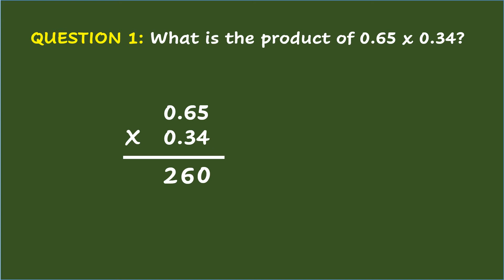Since the answer is more than 10, regroup 1 to the next higher place and retain 5. Make sure to start placing the answer in line with the second digit, which is under 6. Then 3 times 6 plus 1 equals 19. Since the answer is more than 10, regroup 1 to the next higher place and retain 9. Then 3 times 0 plus 1 equals 1. For the last digit, 0 in the multiplier: 0 times 5 equals 0, 0 times 6 equals 0, and 0 times 0 equals 0.